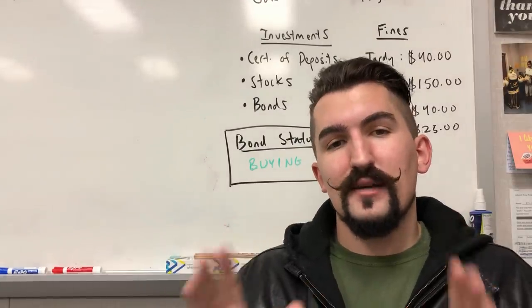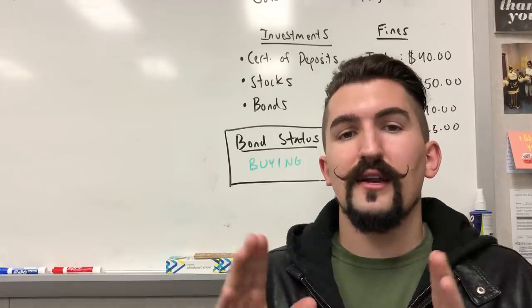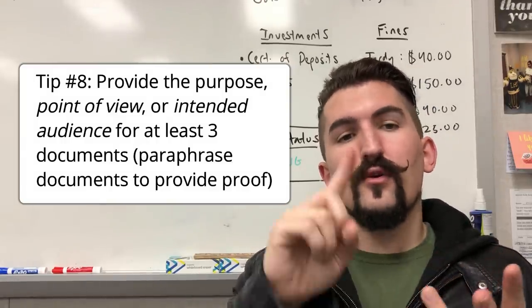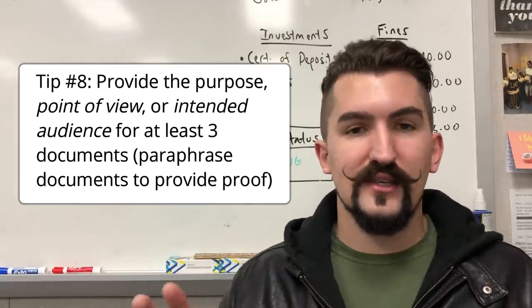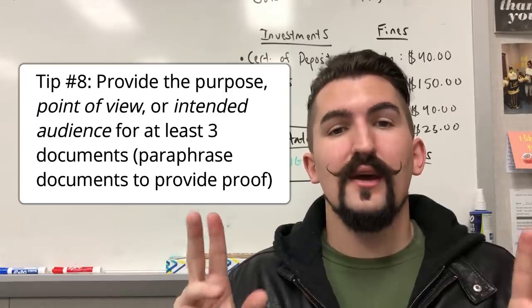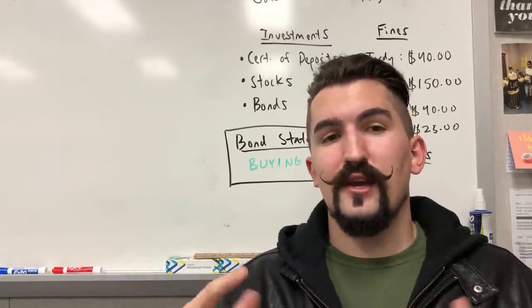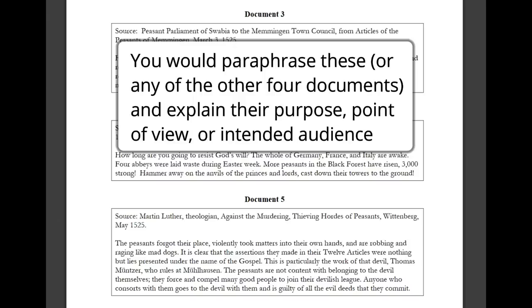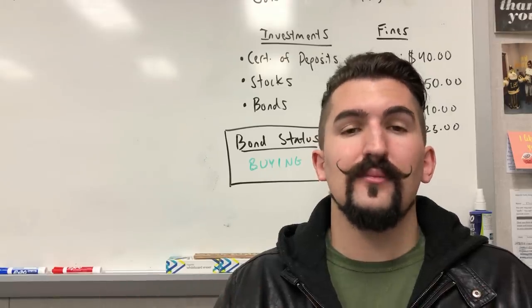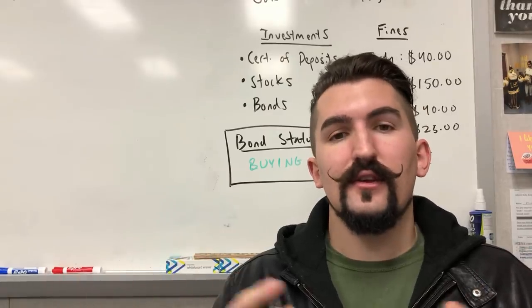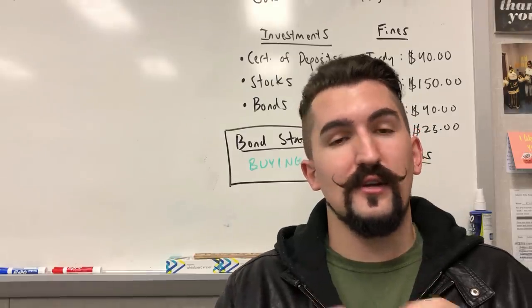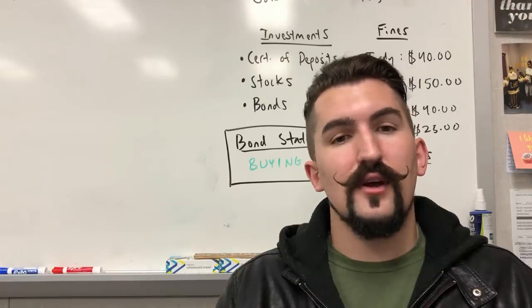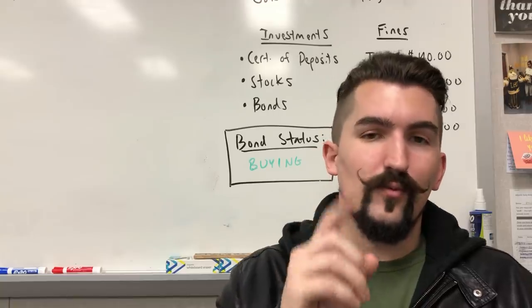As for the analysis and reasoning portions, the best way to get those points is first to provide the purpose, point of view of the author, or the intended audience of the author for at least three documents. That is by far the most simple way to do it, because it's very easy to read a document and try to understand who the author is talking to, what their message is, or why they wrote the document, and then explain that. So you're going to cite specific examples from these documents — paraphrasing, not quoting — and analyze what the purpose of that document was, what the point of view was, or who the intended audience was. And you're going to relate that to whatever your argument is. You're not just randomly providing information; it should be relevant to your argument, and that is worth one point.